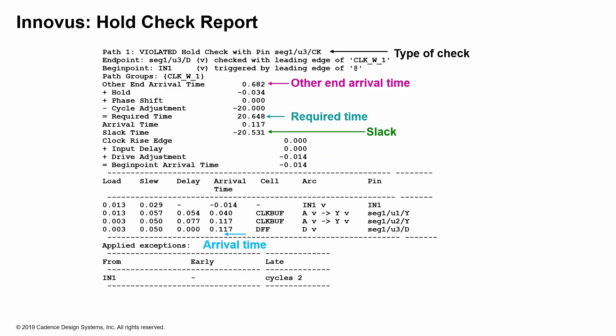This report shows a hold check in the Innovus implementation system. Path one in this case is violated — the hold check. It is reporting where that particular hold check has been violated. The endpoint is checked with the leading edge of clock W1, and the begin point is N1. So this is an input-to-flop path. The report also shows the other end arrival time value.